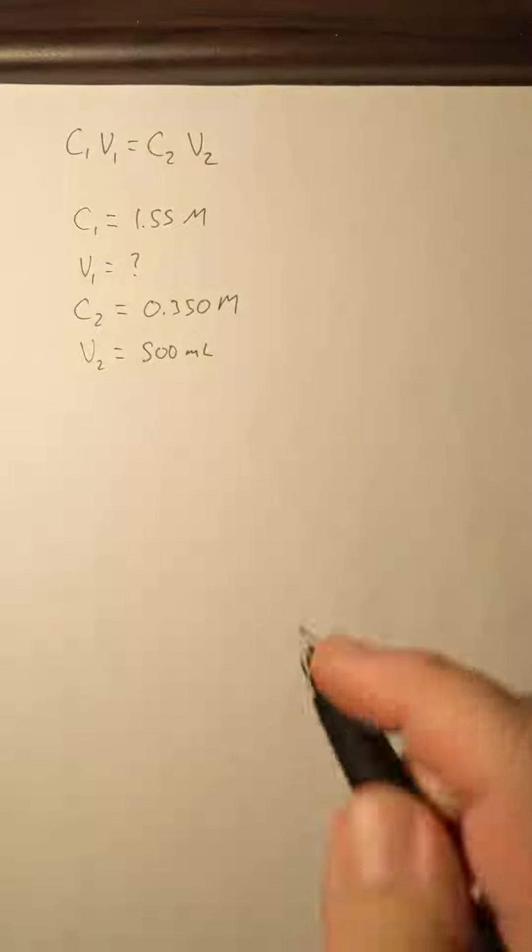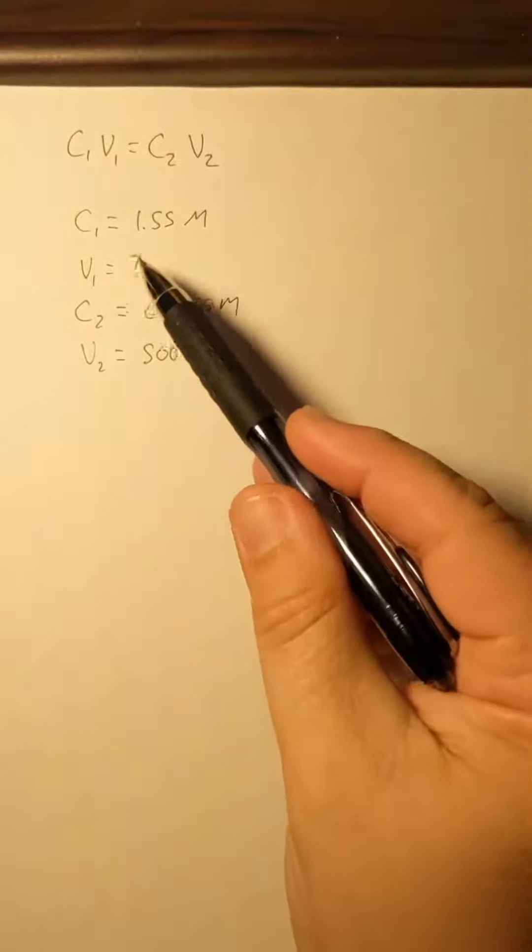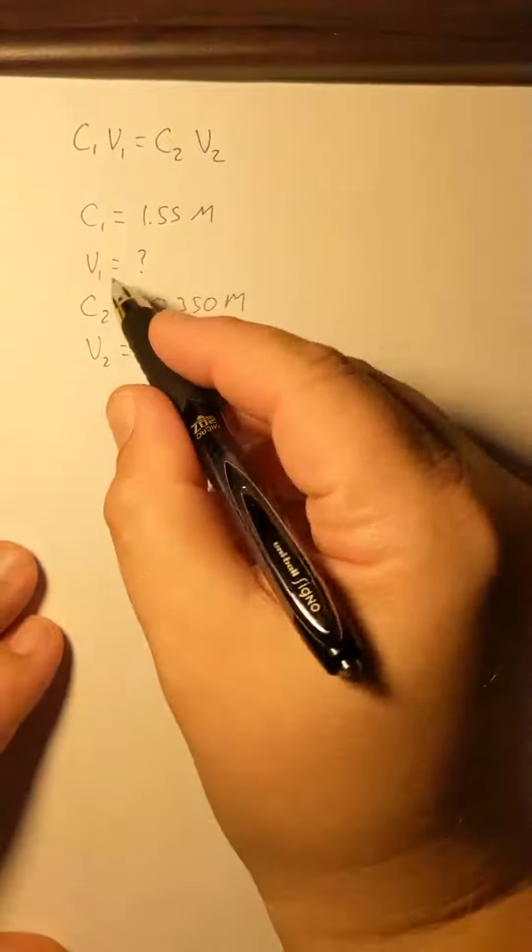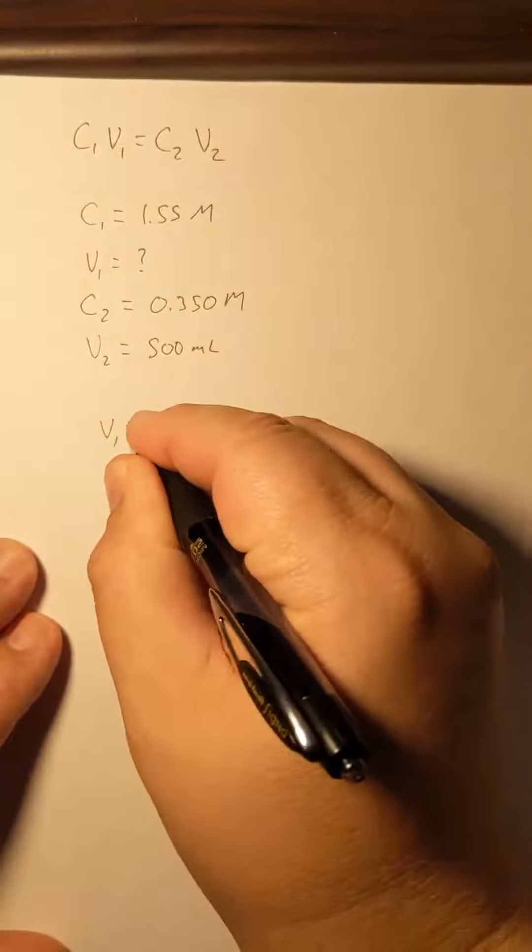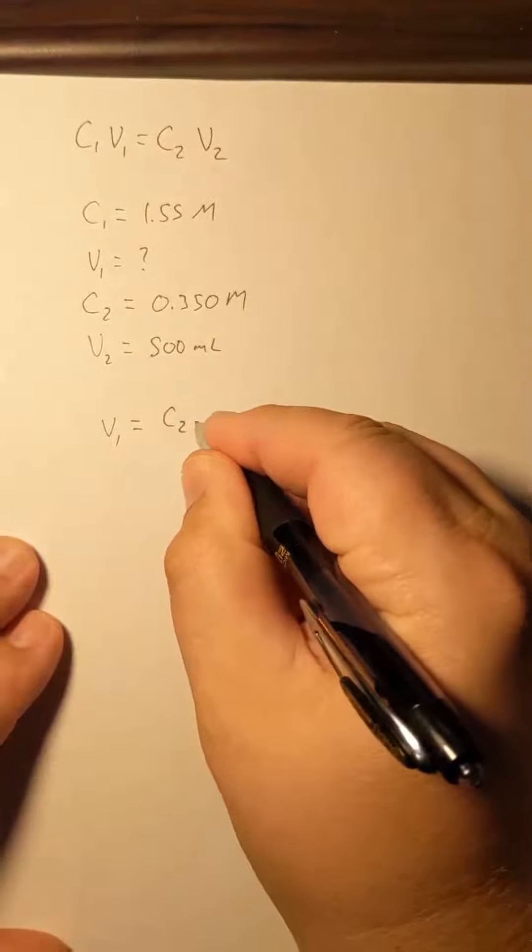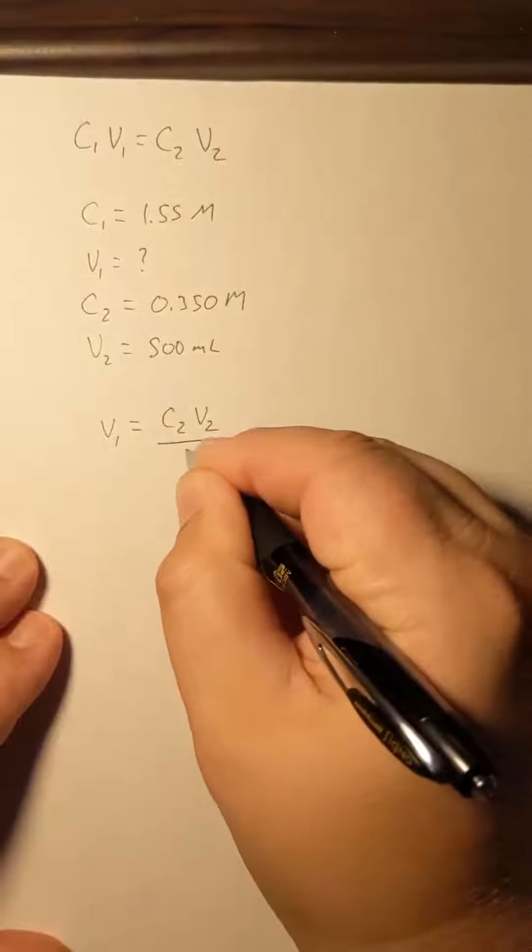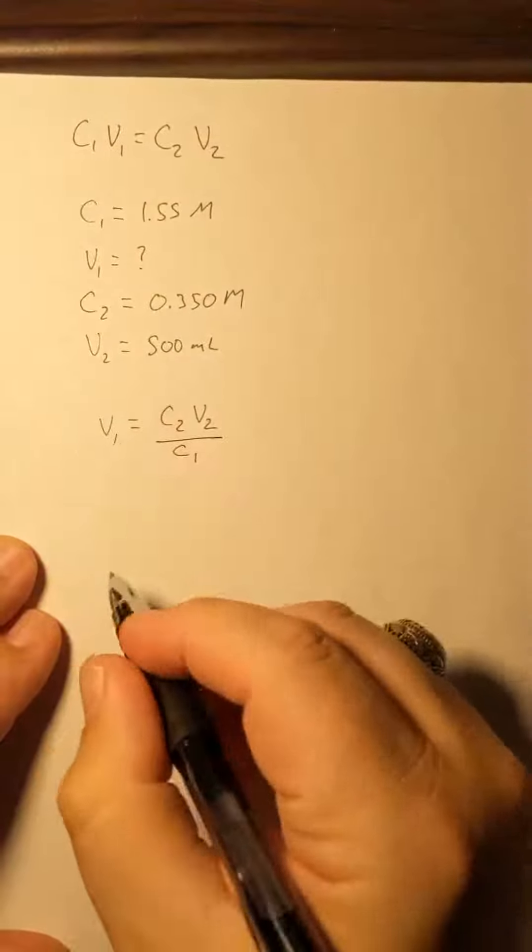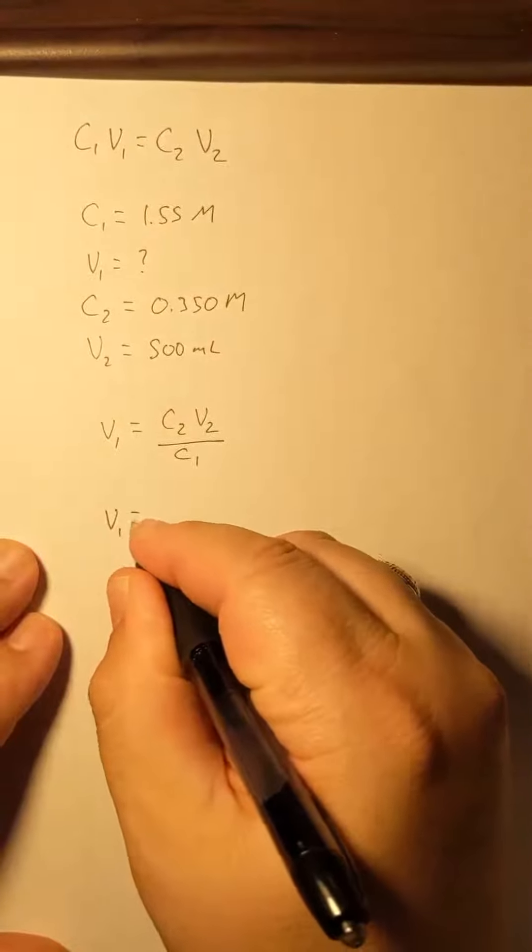Now, we don't need to convert milliliters into liters as long as we want our answer for V1 to be the same units as V2. So we can go ahead and rearrange to get V1 by itself. So V1 would equal C2V2 over C1, and now we can plug everything in and solve for V1.